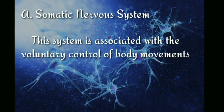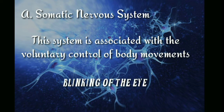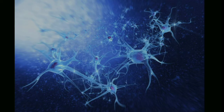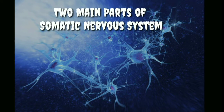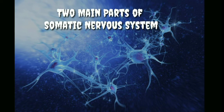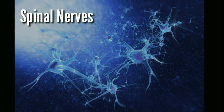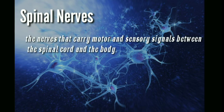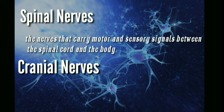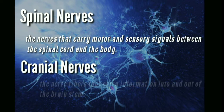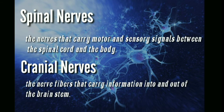The somatic nervous system is associated with the voluntary control of body movement, like blinking of the eye. It has two main parts: the spinal nerves, which carry motor and sensory signals between the spinal cord and the body, and the cranial nerves, which carry information into and out of the brainstem.